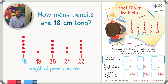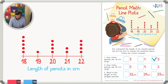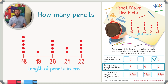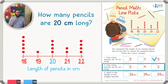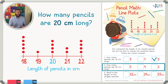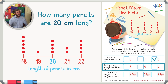Let's check five. Now question two: how many pencils are 20 centimeters long? We go to 20 on the line plot. Each dot represents just one pencil, so we count the dots: one, two, three, four — there are four colored pencils that are 20 centimeters long. Let's check four.